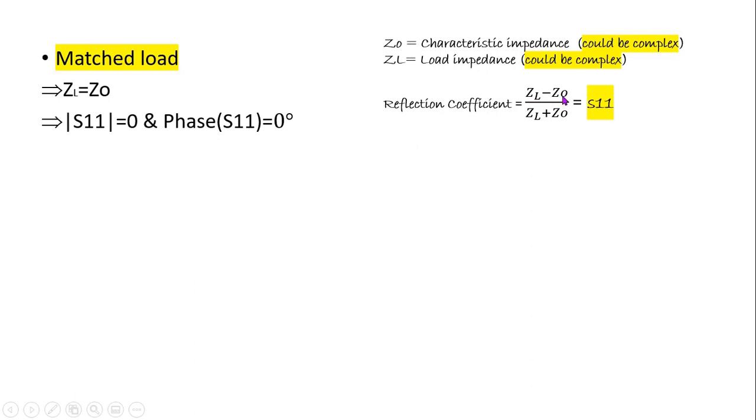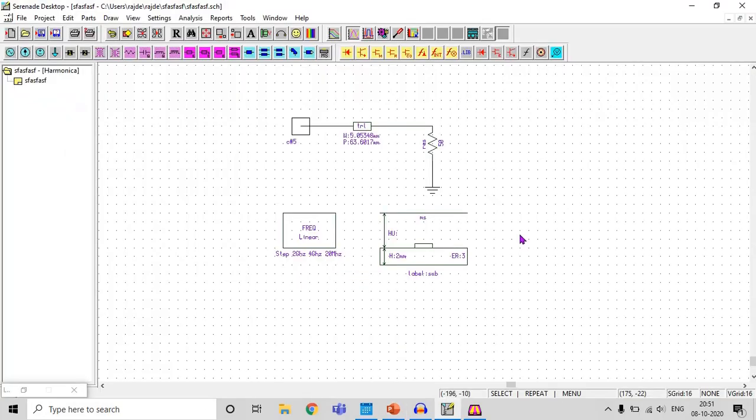And why is it coming 0? Because ZL equal to 50, Z0 equal to 50. Or if ZL is complex also and Z0 is also complex, because for matched load these two need to be the same, then also they are getting cancelled with each other and we are getting S11 magnitude 0. And for all cases we are getting phase S11 0 degree. So let's see, are we getting 0 degree in our simulation?